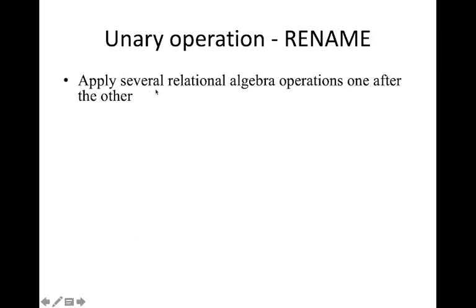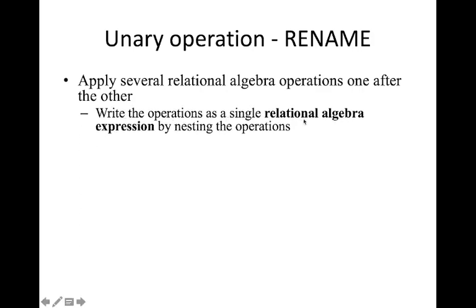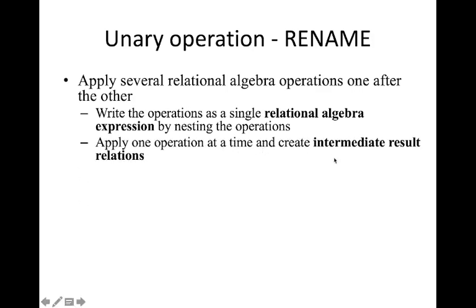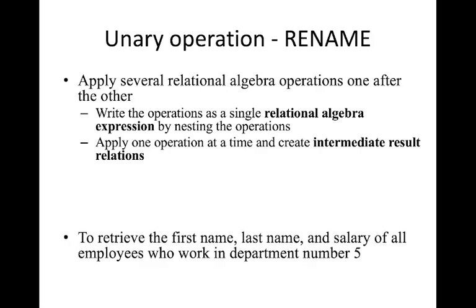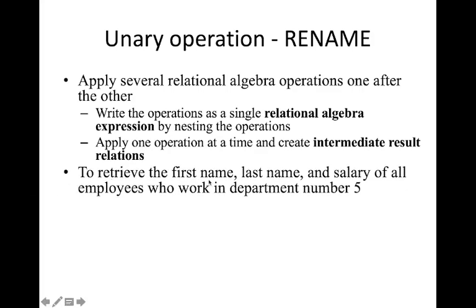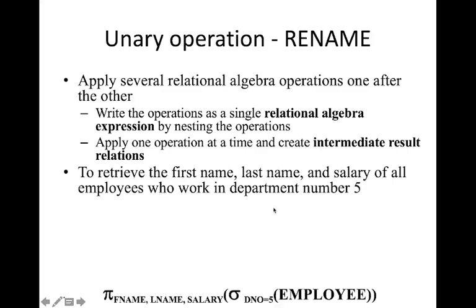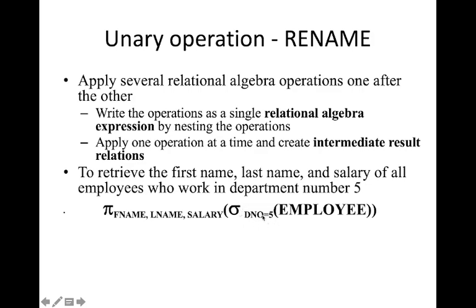There is another unary operation — the rename operation. If you want to apply several operations one after another and store intermediate results, it can be very difficult to write as a single relational algebraic expression. What we can do is apply one operation at a time, store that intermediate table, and give a name to it. For example, to retrieve the first name, last name, and salary of employees in department number five.